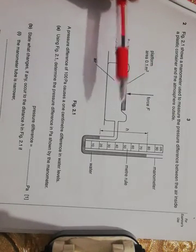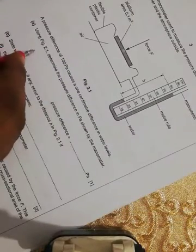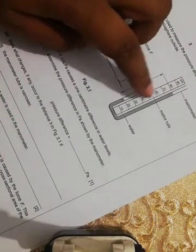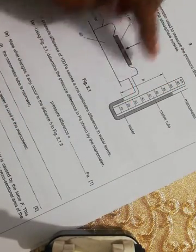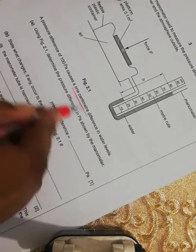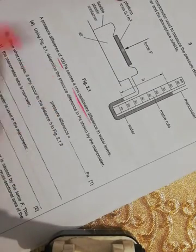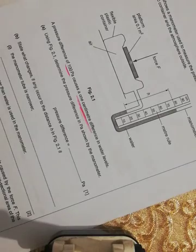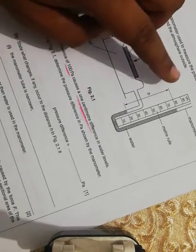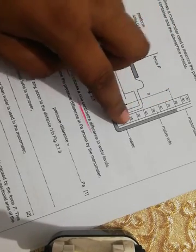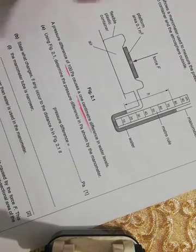So he says that if the difference in the levels of the mercury is one centimeter, the pressure will be 100 Pascal. So here you see the difference between both levels of the mercury in the diagram. Here it is 20, here it is 80, so the difference is 60.